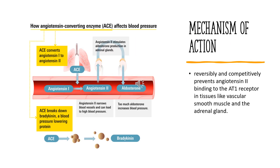Mechanism of Action. The renin-angiotensin-aldosterone system regulates blood pressure. Angiotensin-2 is a peptide hormone that is a principal pressor agent in the renin-angiotensin-aldosterone system. It is a potent, direct vasoconstrictor that binds to the angiotensin-2 type 1 receptor (AT1 receptor) to stimulate the synthesis and release of aldosterone and promote cardiac stimulation.